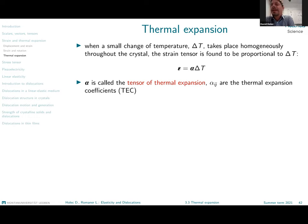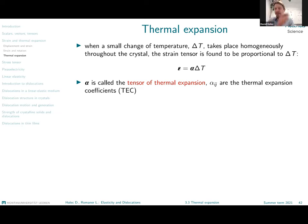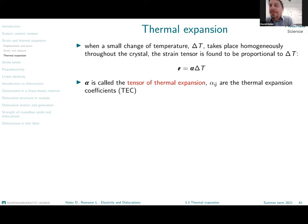At the very end of the lecture, we connected strain with temperature change. The physical material property that connects strain generated by a change of temperature to the temperature itself is called the thermal expansion coefficient. This has very interesting consequences for the symmetries of both the strain tensor and the tensor of thermal expansion.